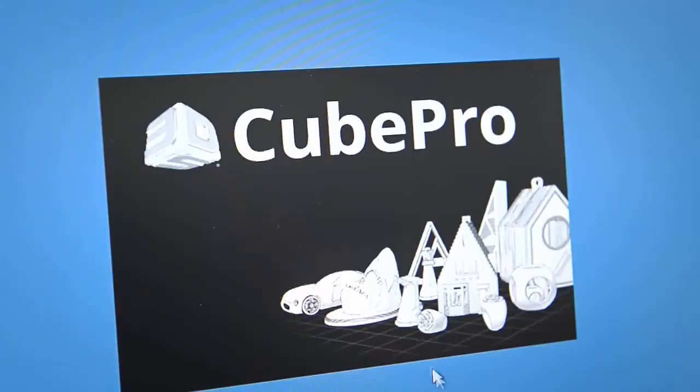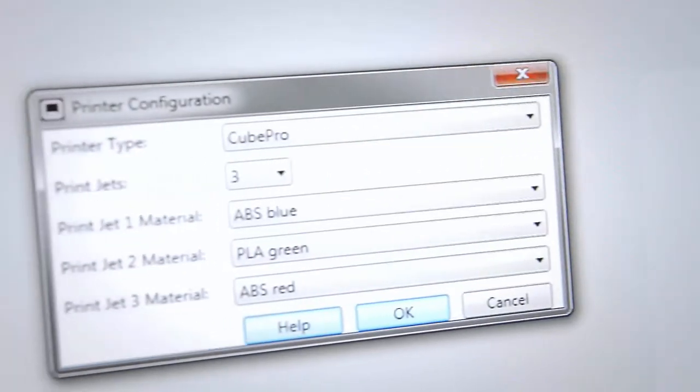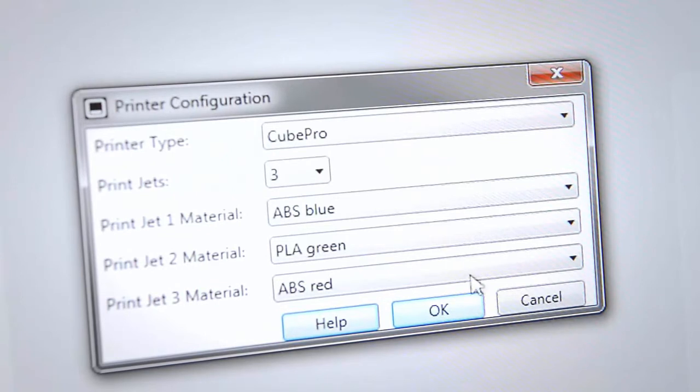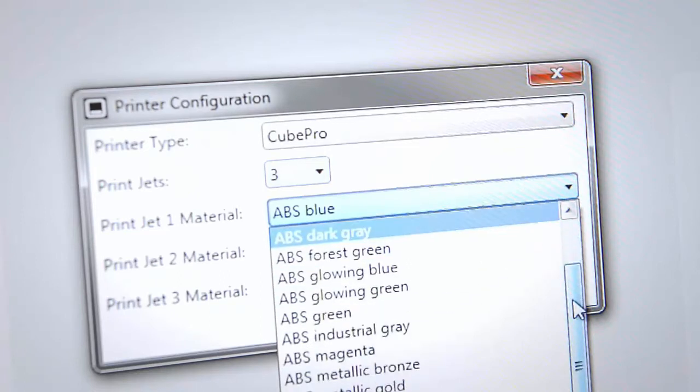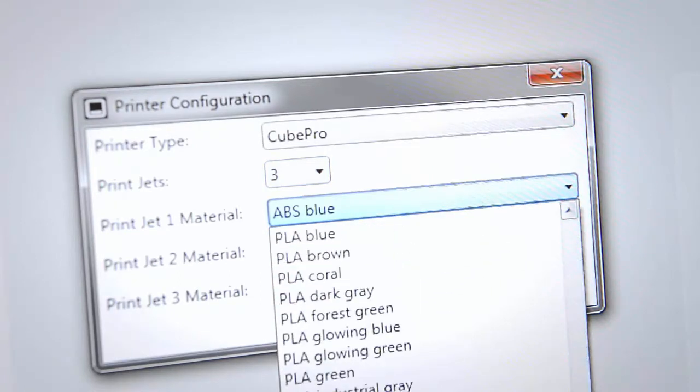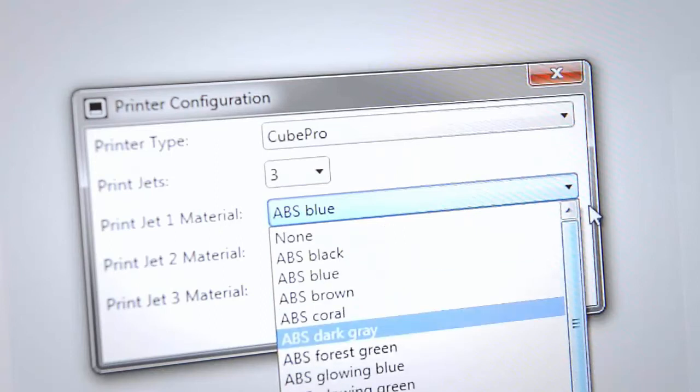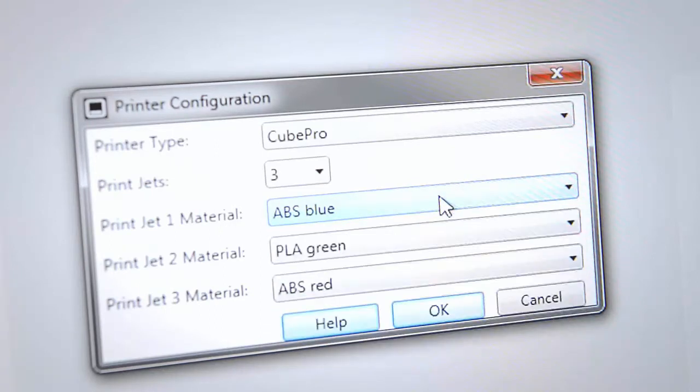Looking at the 3D Systems Cube Pro Trio software, the printer configuration shows that it has three print jets or nozzles features, as well as the ability to use ABS and PLA materials, and clearly has a wider range of colours than the Uprint SE Plus. Note that the Cube Pro uses PLA material as support, as opposed to specific special support material with the Uprint SE.